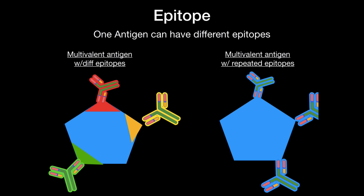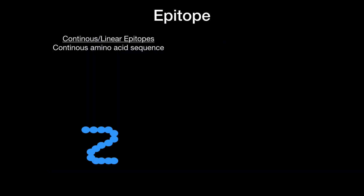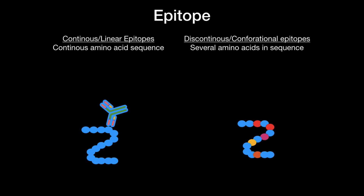Now that's one type of classification. Another type is what we call continuous or linear epitopes where we have a continuous amino acid sequence which can be recognized by an antibody. And there are discontinuous or conformational epitopes which are formed from several amino acids in a sequence. Antibodies can bind to these, or even cells that have the right receptors can also bind.